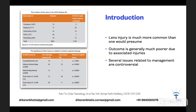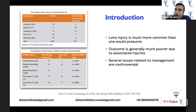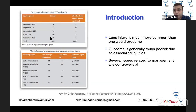The talk is on the approach to lens in ocular trauma. Lens injury is much more common than one would presume, and the outcome is generally much poorer due to the associated injuries rather than the lens itself. Looking at these pictures — contusion, rupture, penetrating injury, intraocular foreign body, perforating injury — most of these have an associated cataract or some sort of lens damage.